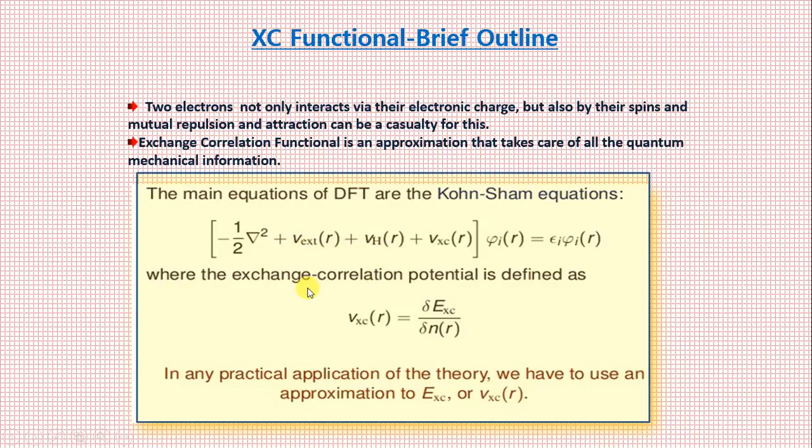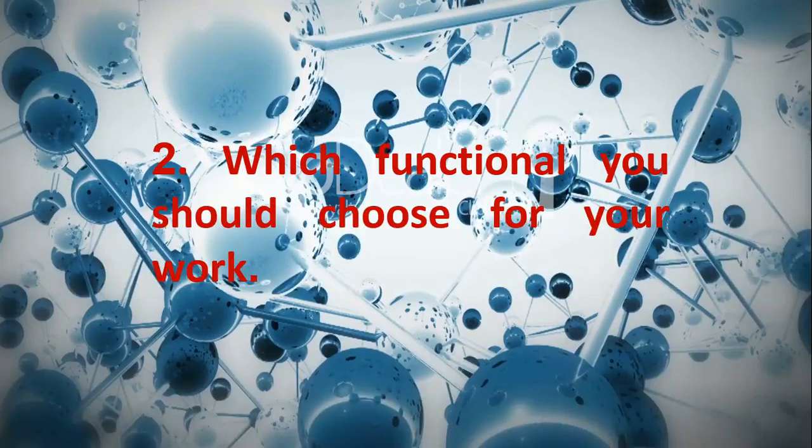This is the Hartree potential and this is the external influence. So the exchange correlation functional is defined as, this is E_XC. We call this actually the exchange correlation functional, and V_XC is defined as delta E_XC by delta n.